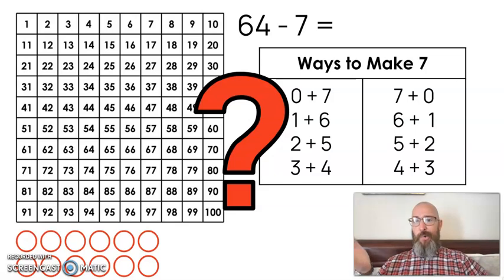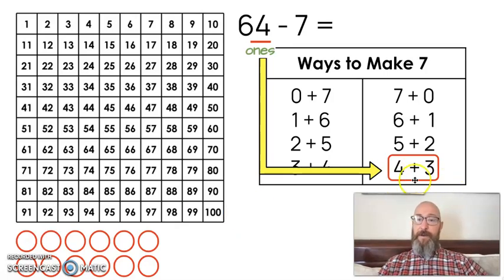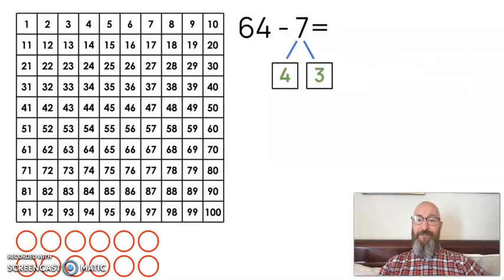Again, we have to ask ourselves which is the best way to break this number apart? Just like we have done on the other two, we look at the ones place. This time we have a 4 in the ones place. So we look for the one that starts with a 4 and I think I have found it. We have 4 plus 3. So when I break this 7 up, I'm going to break it up into a 4 and a 3.